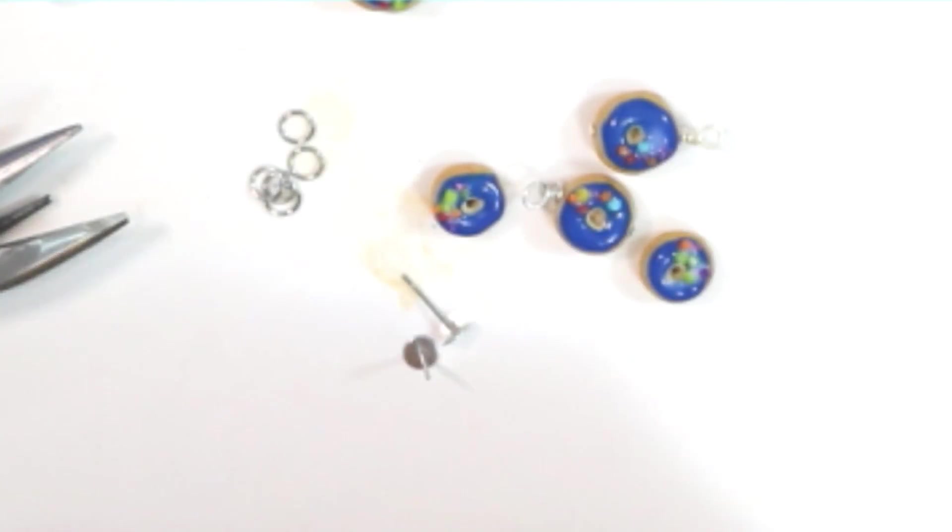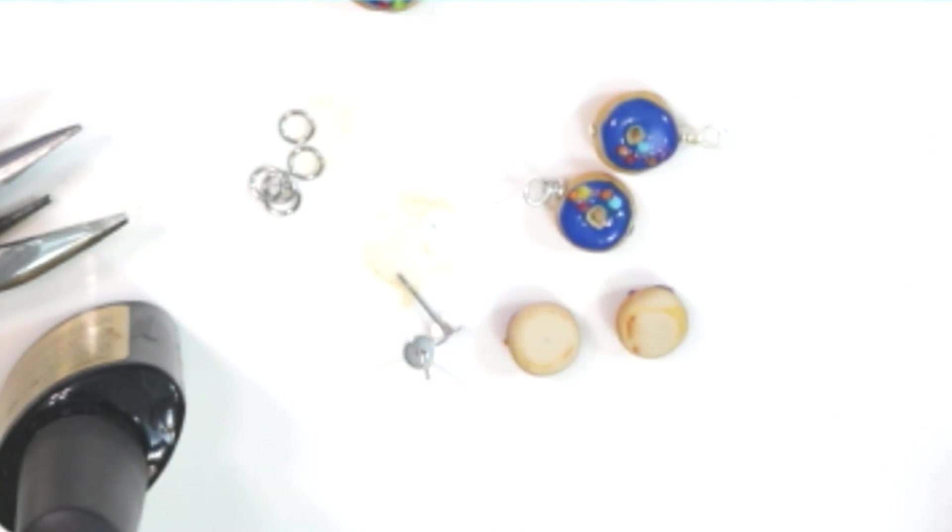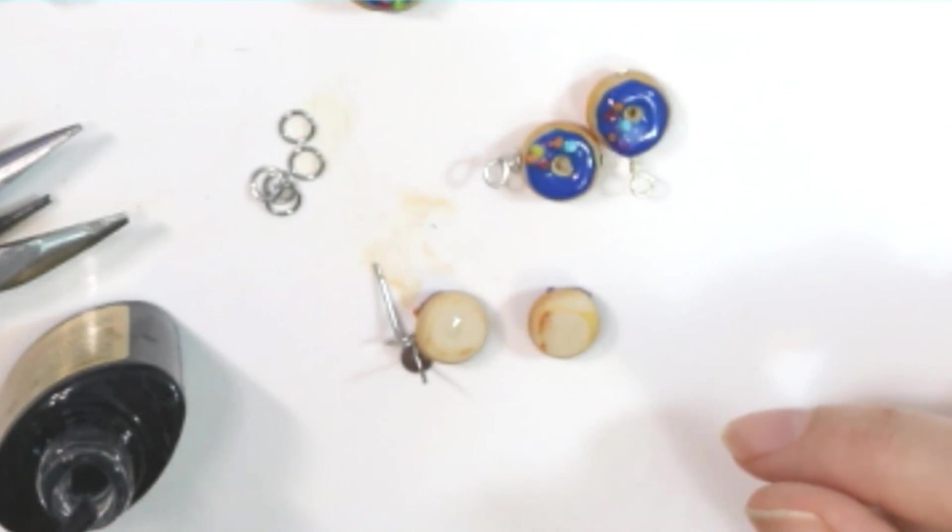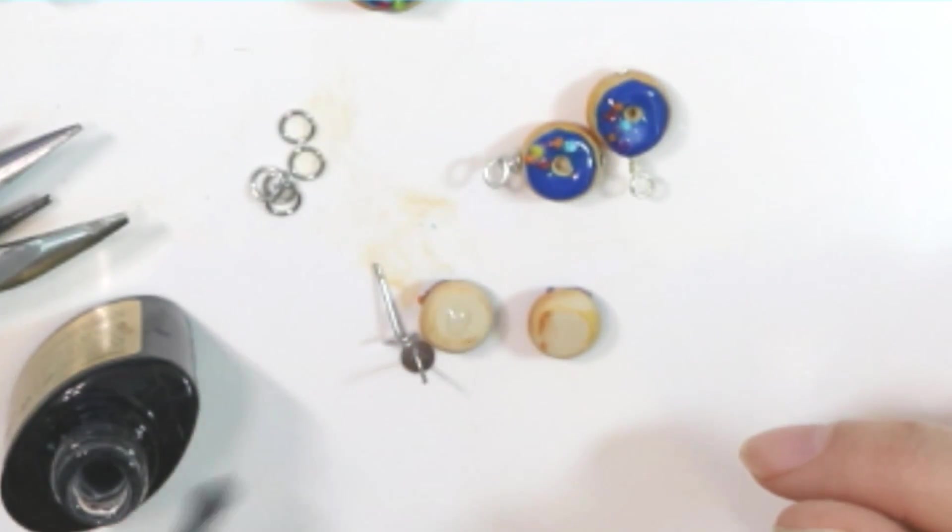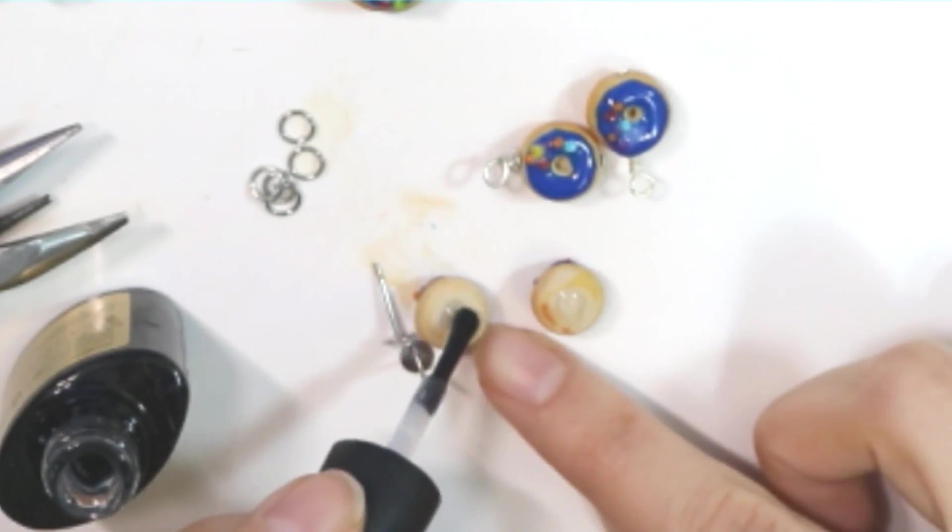What I'm using as a crazy glue is actually UV resin. I really like the hold that UV resin has. Not only can you use it as a gloss, but you can also use it as an all purpose glue. I'm just adding a little dollop on the backs of the studs and then adding on the findings.